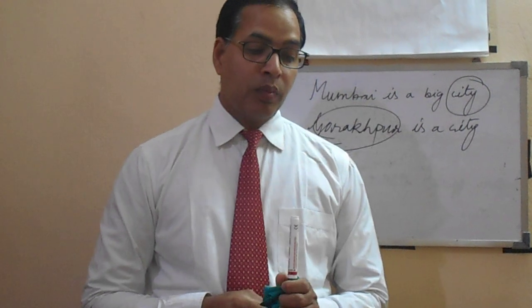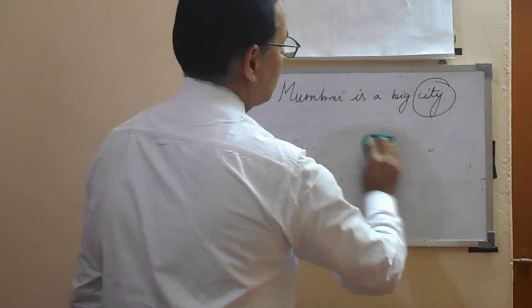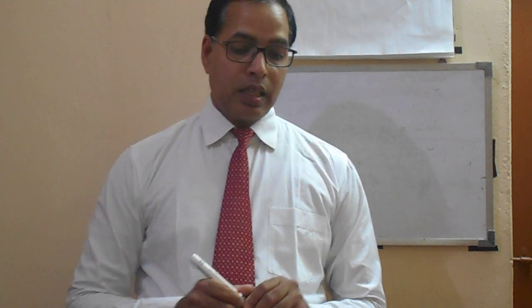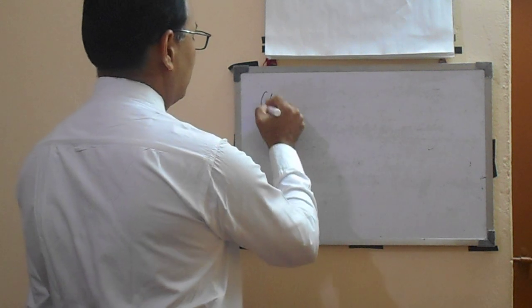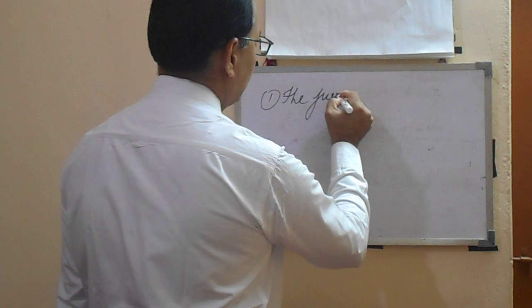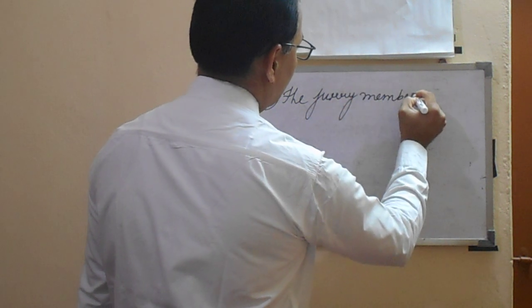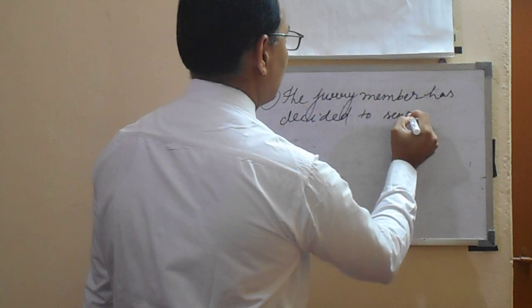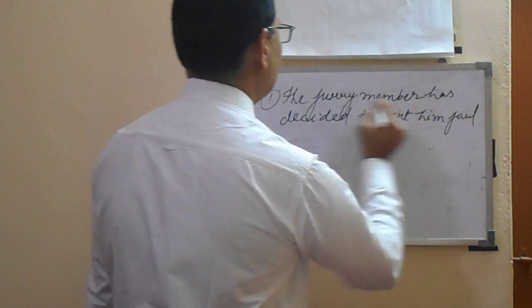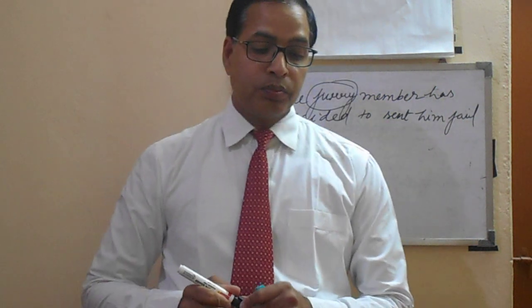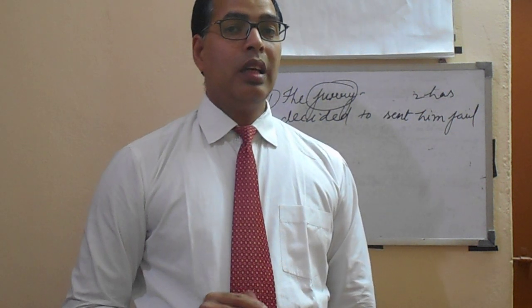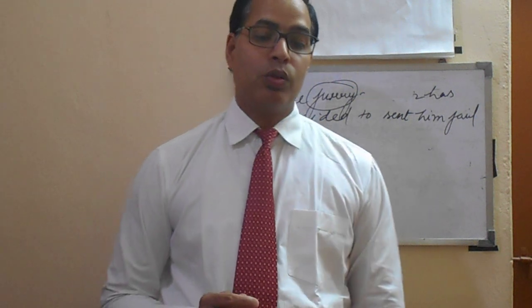We are moving towards the next one — collective noun. What is a collective noun? It is the name of a collection or group of persons, places, or things. For example: 'The jury members have decided to send him away.' Here 'jury' is the collective noun, because in a jury there is more than one person. That is why it is known as a collective noun.